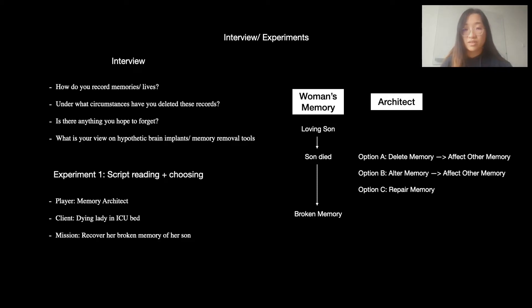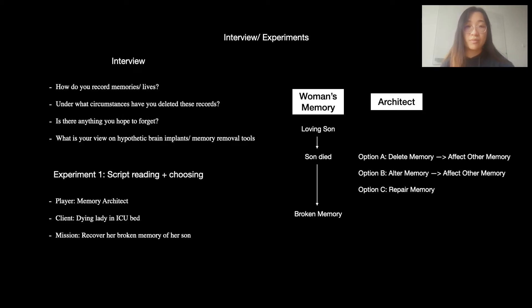I then drafted the script and presented it to several readers. The story centers around a memory architect. His client is an old lady in an ICU bed at the end of her life, requesting him to help her retrieve the memory she had of her son. It is her dying wish to remember her child, who she had mostly forgotten due to a traumatic event. However, when the architect enters her mind through her memory chip, he discovers that her son owed the corporation a large sum of money and was beaten to death by security. The architect is given the choice: obey the dying woman's wish and return her the traumatic memory, alter the memory to give her son a good ending, or remove the memory.